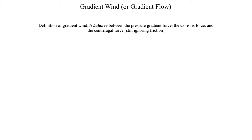The definition of the gradient wind balance is a force balance — meaning the net acceleration and net force is zero — between the pressure gradient force, the Coriolis force, and the centrifugal force.